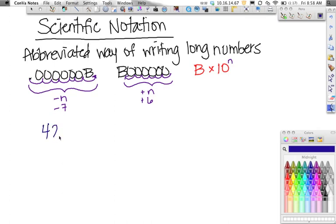So the first number that we're going to do is 420,000. First of all, I forgot to write this down: B needs to be between - BTWN is shorthand for between - between 1 and 10. So it can't be less than 1, and it can't be greater than 10.